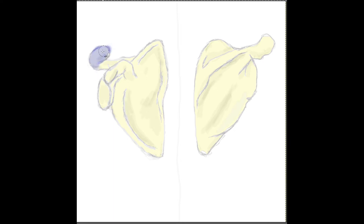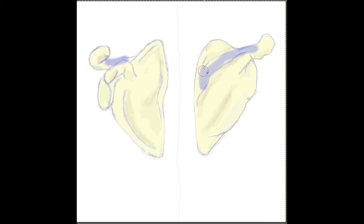Right here is another process called the acromion process, which can also be seen from the posterior view. The acromion process hooks around towards the front of the scapula and projects off of this landmark called the spine of the scapula, which is a very easily palpable landmark on yourself and your clients and helps you find and define the borders and shape of the scapula.